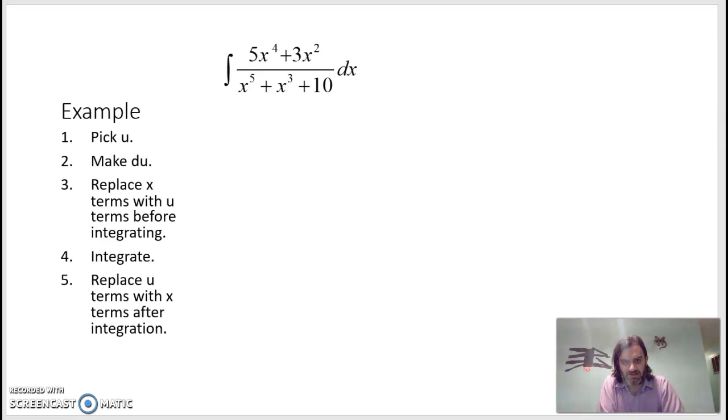Hey, we're working some u-substitution integration problems. This particular one is the integration of a fraction. The numerator is 5x to the 4th plus 3x squared. The denominator is x to the 5th plus x to the 3rd plus 10. This is dx. So we're trying to find a u here because this really doesn't fit any function-specific formula yet. It's not a power rule for sure.